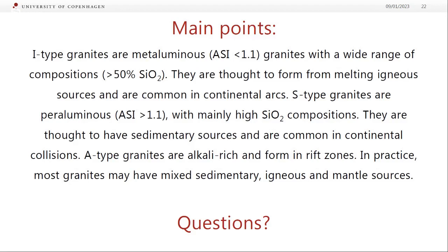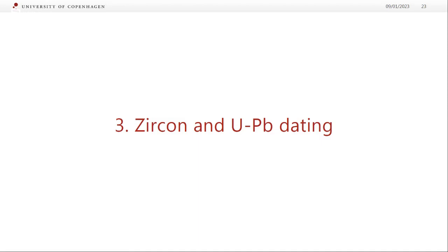A student asks why there is so much potassium and sodium in A-types. The answer relates to the fact that they're melting at higher temperature because they're fairly anhydrous, and there's also suggestion that some of them could have melted sources that had already been depleted once — if you take an igneous protolith, melt it once you get an I-type granite, and if you remelt the restite, then maybe you get more of an A-type granite. They needed to be covered because there are some in the practical.